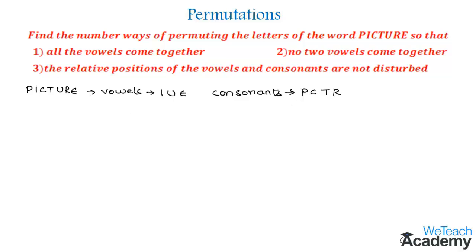The first case is that all the vowels should come together. To find the number of ways we can arrange the letters of PICTURE so that all the vowels come together, we first treat all three vowels as one unit. Then we arrange these four consonants and one unit of three vowels — that gives us five elements total, which can be arranged in five factorial ways.